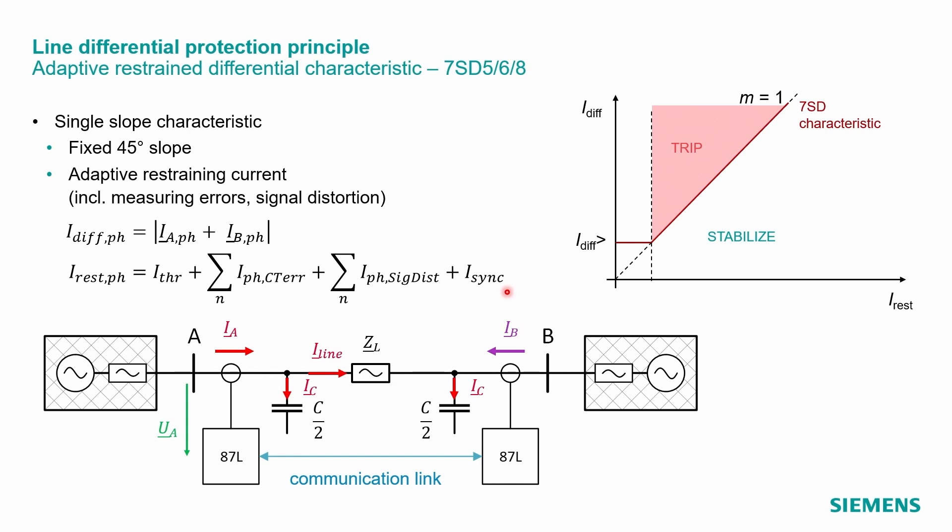Therefore, the stabilization characteristic looks different and is a single slope of 45 degrees, so M equals one. We provide a setting for the minimum differential pickup current. This should set higher than the expected capacitive charging currents. A differential current above the characteristic will trip the circuit breaker, or the relay will trip the circuit breaker. And below the characteristic the relay will stabilize.